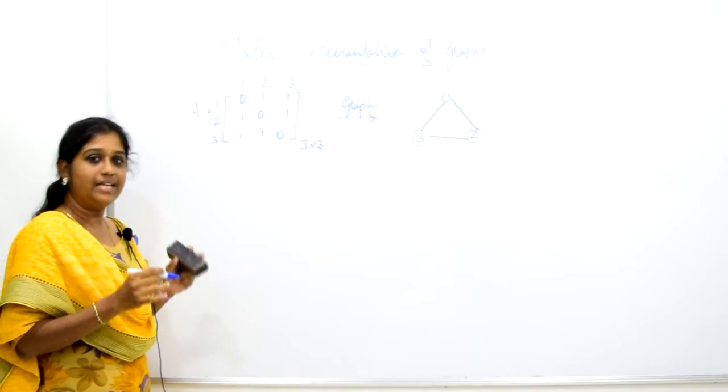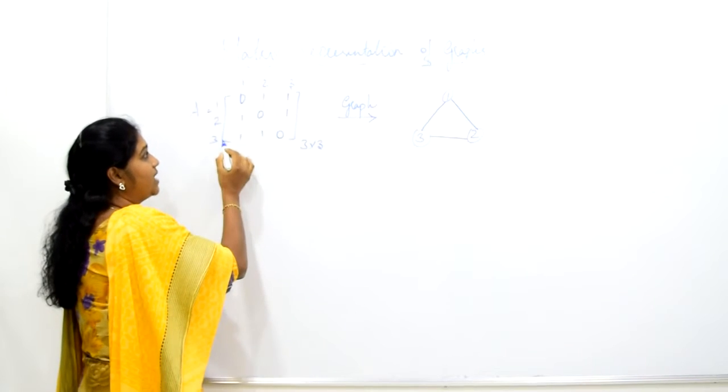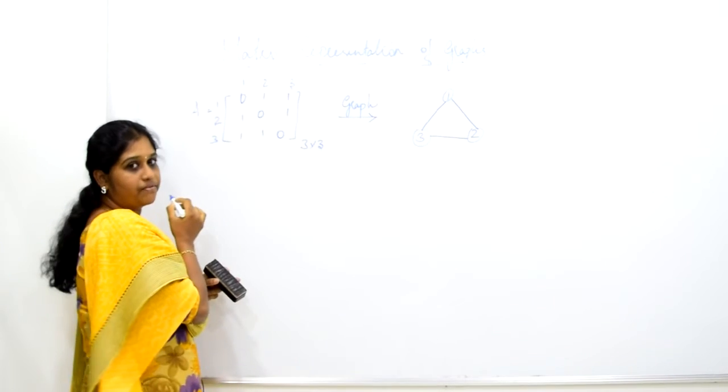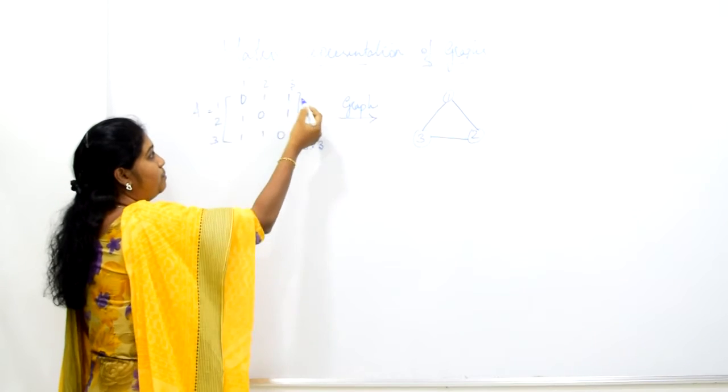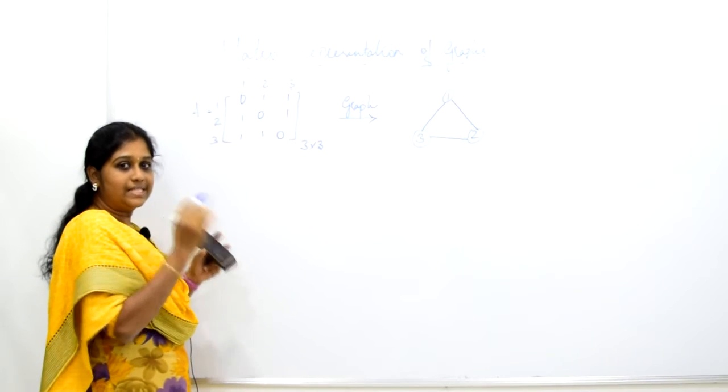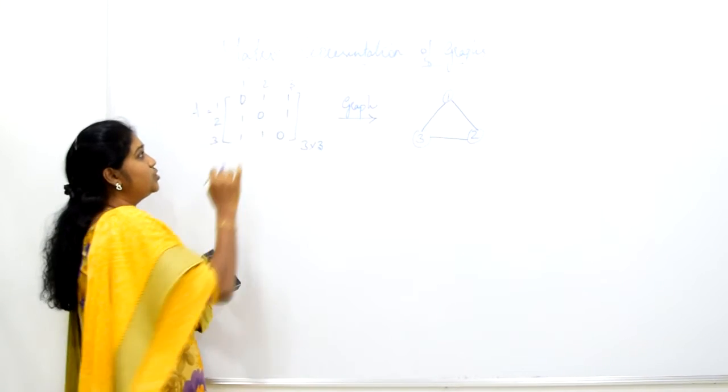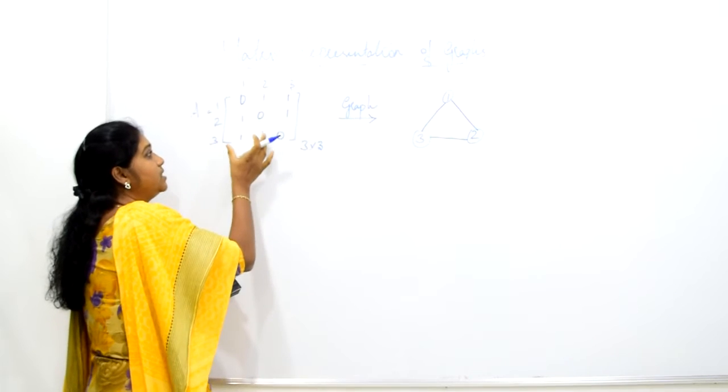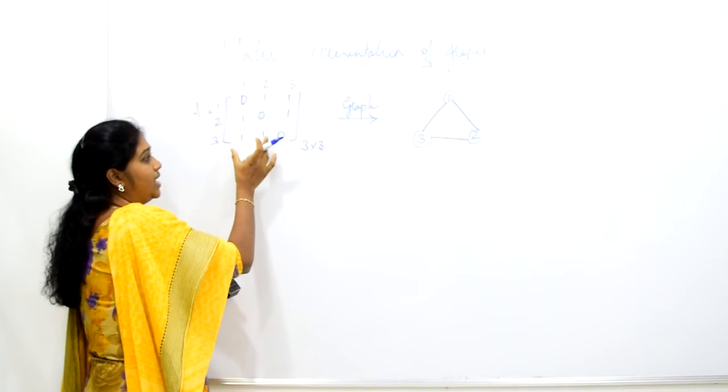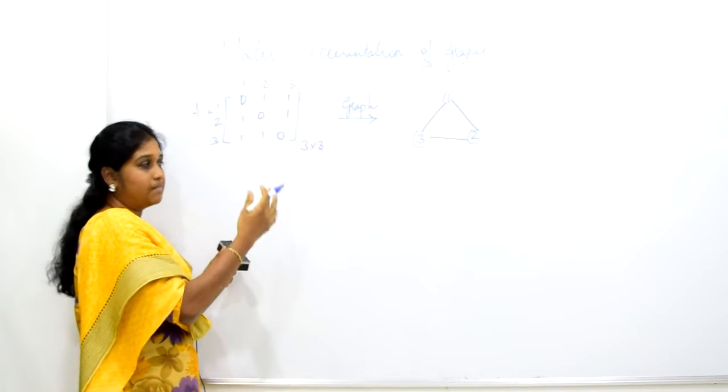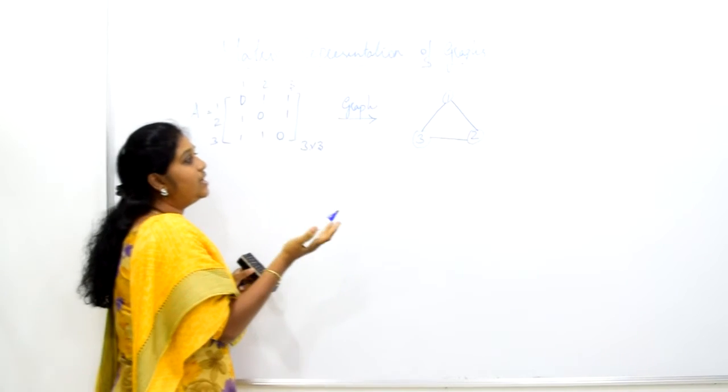Why is that the case? It is because an adjacency matrix is always a symmetric graph. The lower and the upper triangle both will be having the same elements. So if I connect the upper triangle, the lower triangle need not be connected. It is all the same.